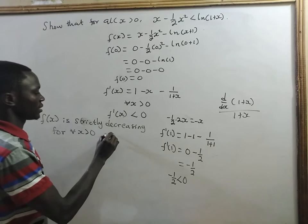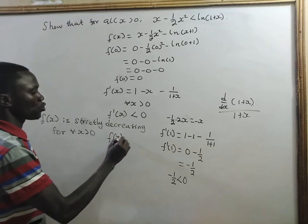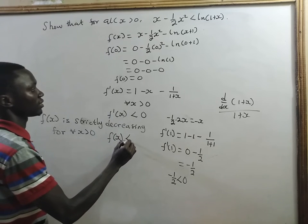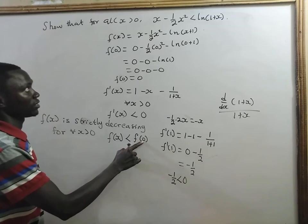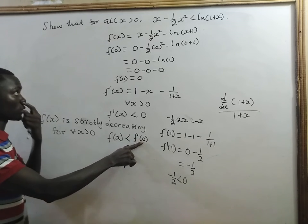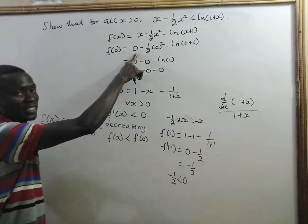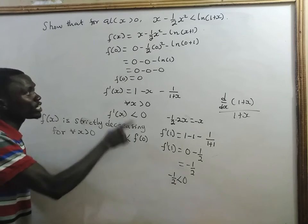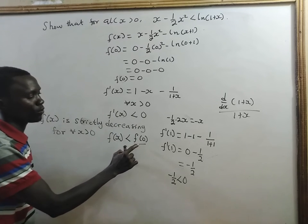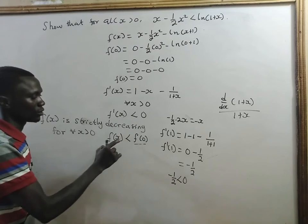So, we can say that f(x) will always be less than f(0). That is, f(0). Because our f(0) is 0. So, if f(x) is always decreasing, it will always be less than the value of f(0).